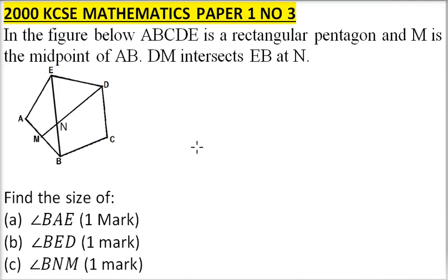So we have M there. DM intersects EB at N. So we have our diagram here.